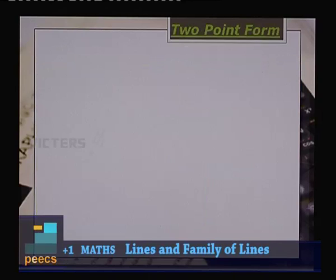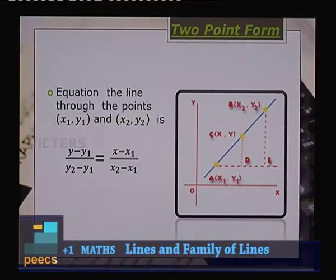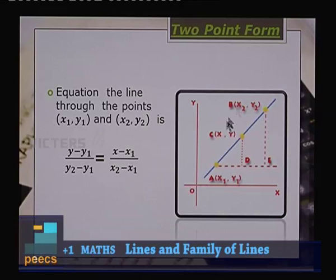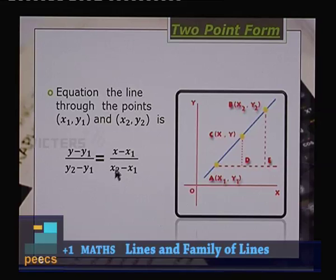Two-point form: The equation of the line through points (x₁, y₁) and (x₂, y₂) is (y − y₁)/(y₂ − y₁) = (x − x₁)/(x₂ − x₁). Here two points are given and the general point is (x, y). The slope is (y₂ − y₁)/(x₂ − x₁), which is substituted into the point-slope form.